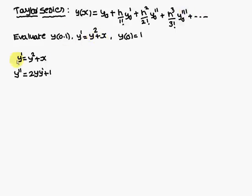Since y' = y² + x is given, we need to find the second differentiation, because in the Taylor series formula we need y₀', y₀'', y₀''' and so on. So y'' is the differentiation of y² + x: the differentiation of y² is 2y·y', and the differentiation of x is 1.